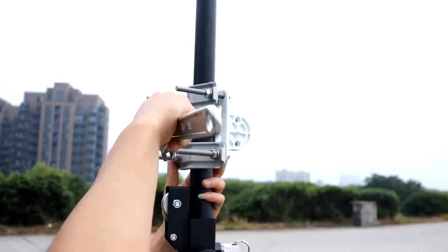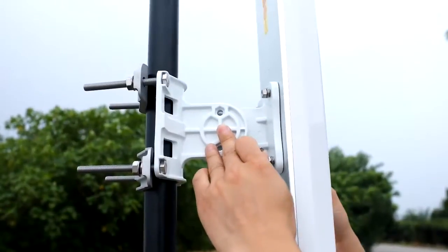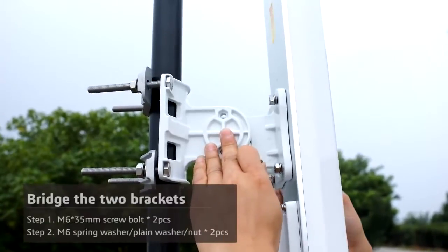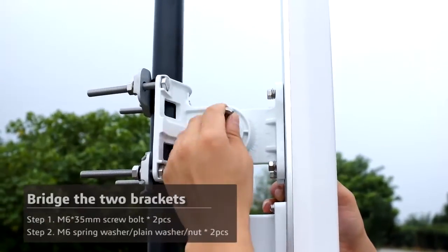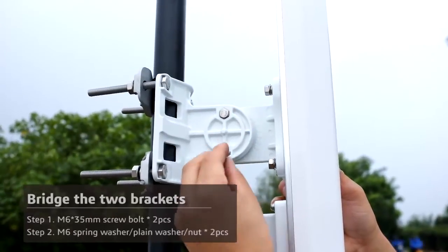In the third step, we'll be installing the radio onto the pole. First, slide the radio bracket into the pole bracket as shown in the video. Then line up the two holes and slide through the two M6 35 screws into the holes as the direction shown in the video.